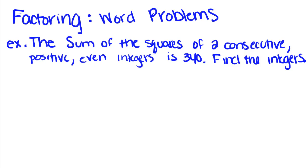The sum of the squares of two consecutive positive even integers is 340. Find the integers. I know that sounds like a lot, but where it tells us that it's positive and integer, that just tells us it's a positive whole number.